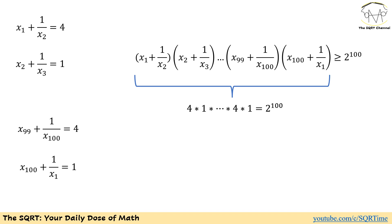Now let's focus on the values from the original problem. We have x1 plus 1 over x2 equals 4, x2 plus 1 over x3 equals 1, and so on. Instead of using the inequality, we can substitute the actual values: we replace the first term with 4, the second term with 1, and so forth, and finally replace the last term with 1.